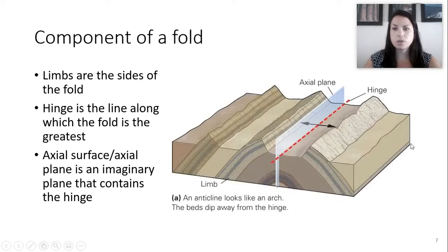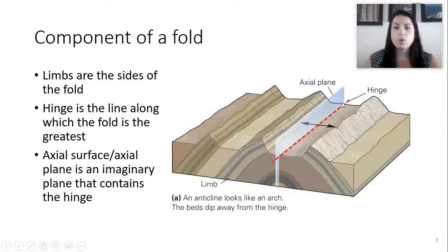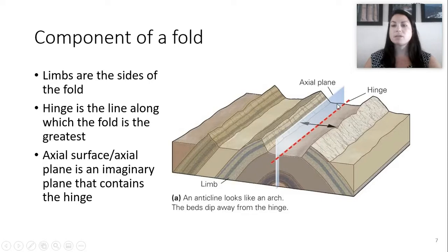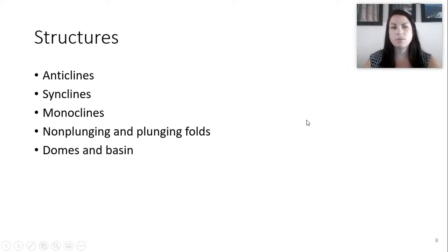Here are those components in an example. The limbs are the sides of the fold. The hinge is the line along where the fold is the greatest. In this case, the hinge coincides with the axial plane or the axial surface, which is the imaginary plane that contains the hinge. Sometimes this is different because the hinge could be where the maximum is, but if it's plunging, then the axial plane will be in a slightly different orientation.